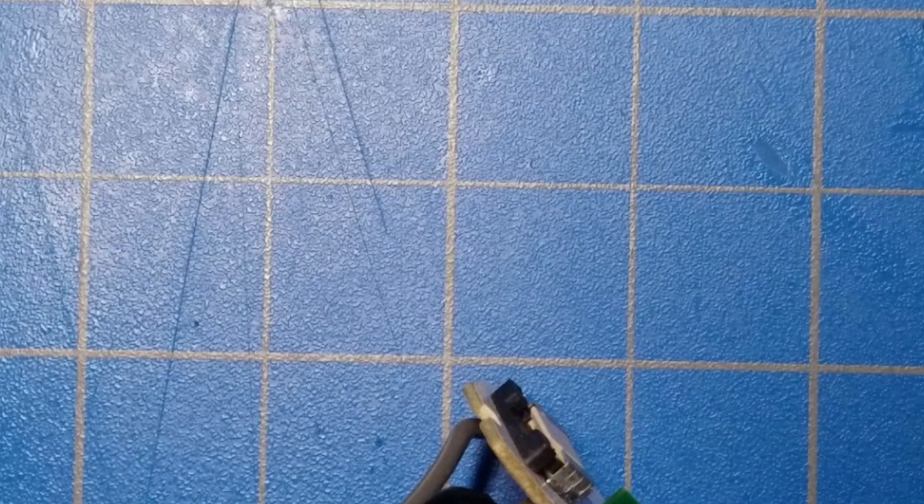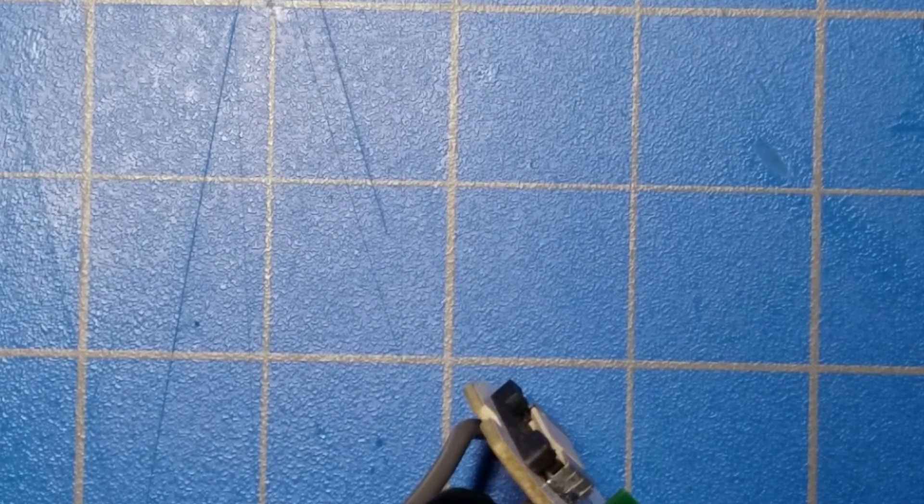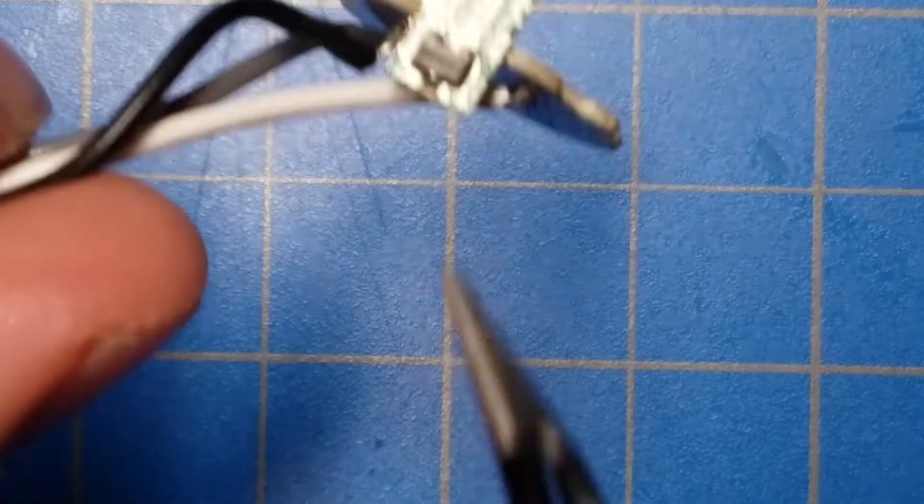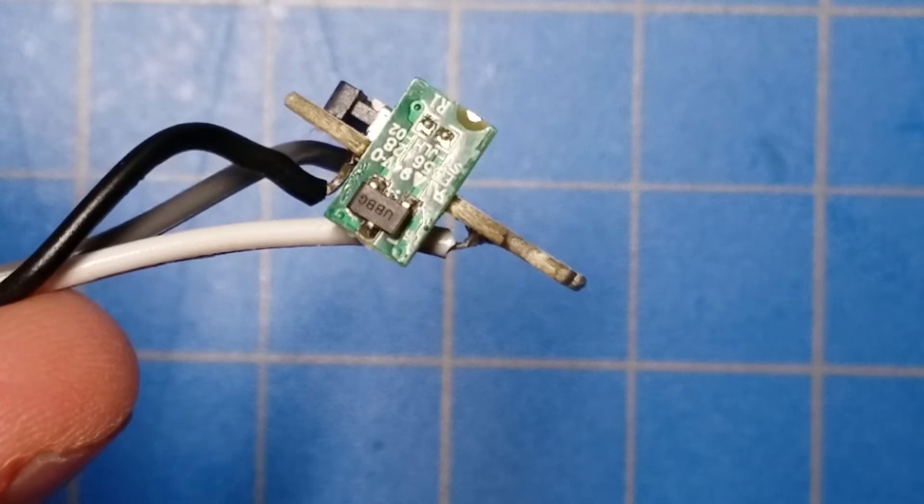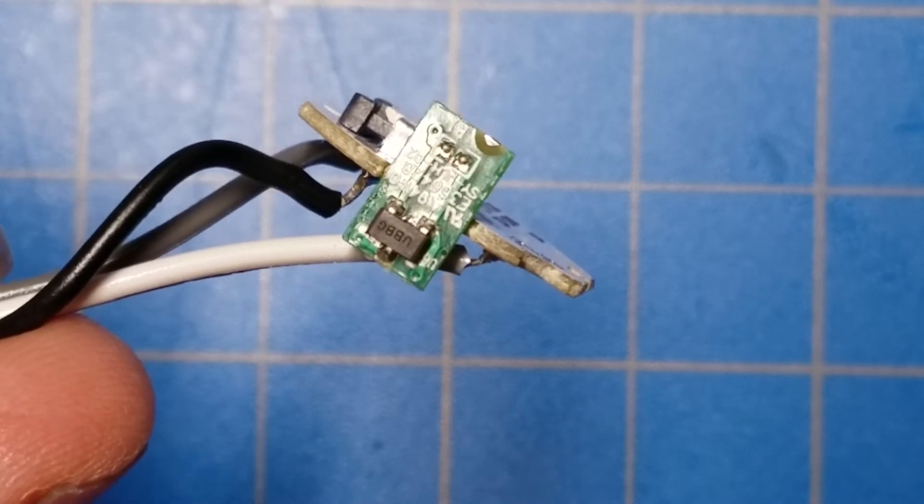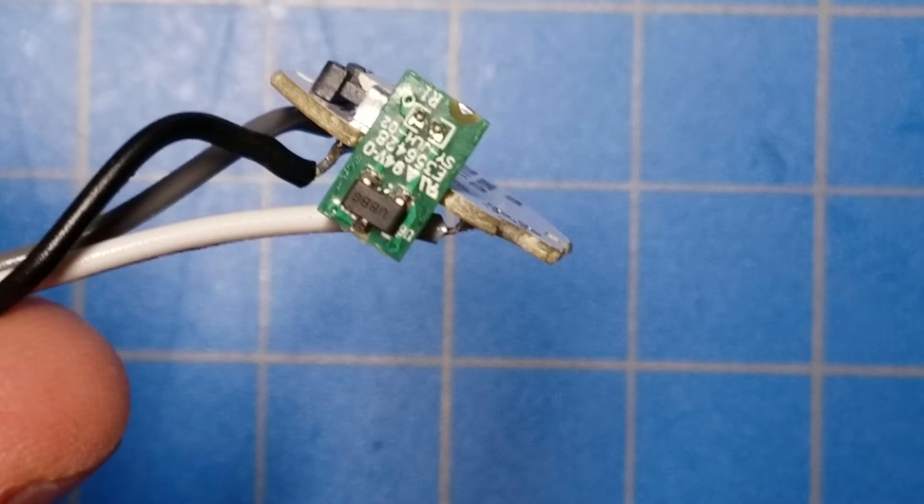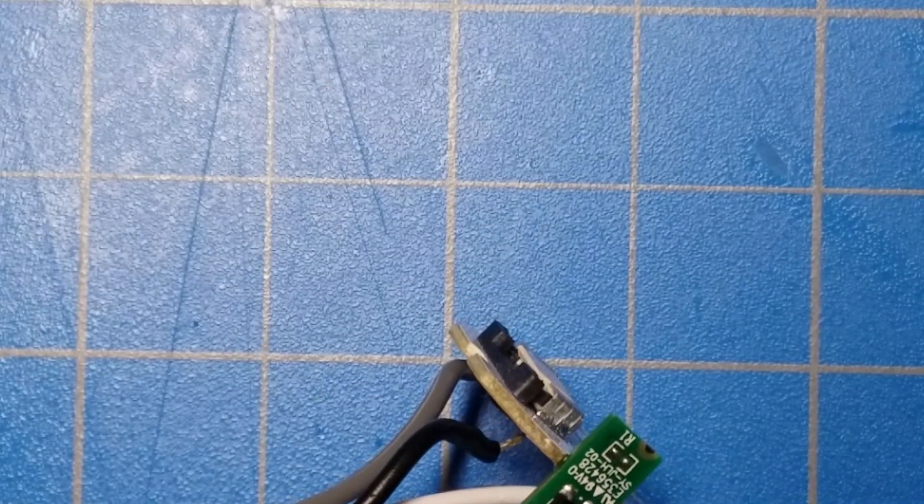But if you have a board that is small enough to fit, could you repurpose this PCB here to act as the switch to turn your custom module on and off? And to sort of show you how you could